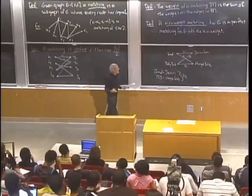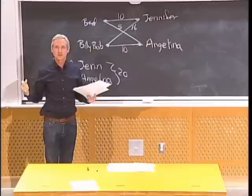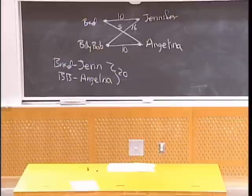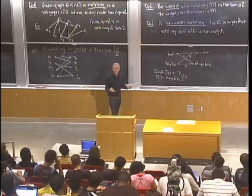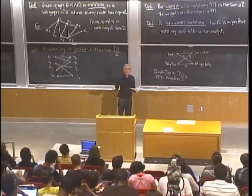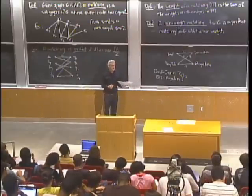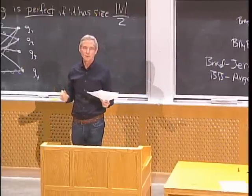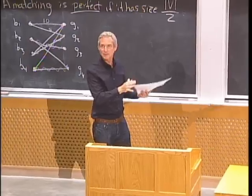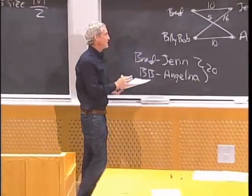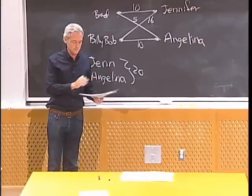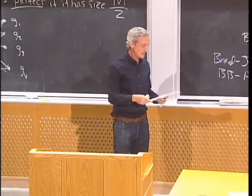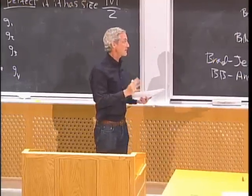Finding the maximum matching or the minimum weight perfect matching are both solvable tractable problems — you don't get a million dollar prize for solving them. The algorithms run in quadratic to cubic time, so they're not NP-complete. But they are pretty complicated, so we're not going to cover them in 6.042. Instead, we'll look at a slightly different version of the problem that's more useful in practice, because there's a very nice algorithm for it.